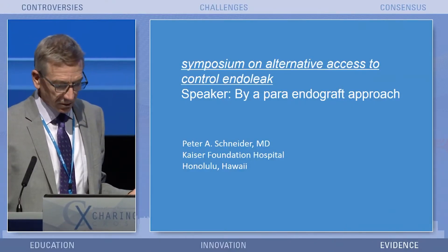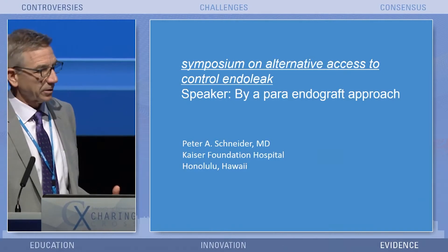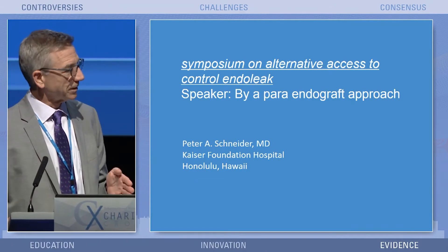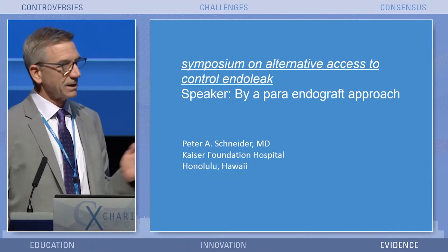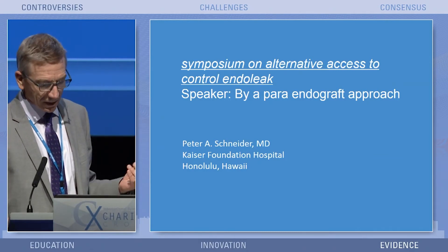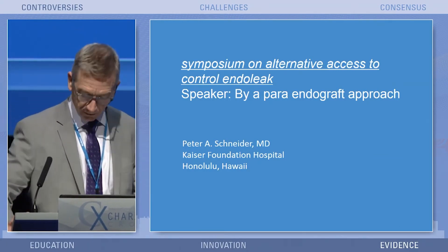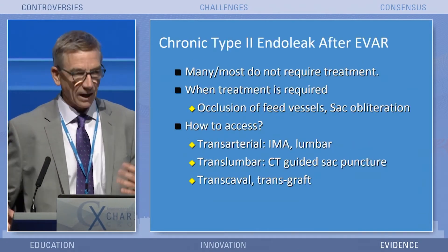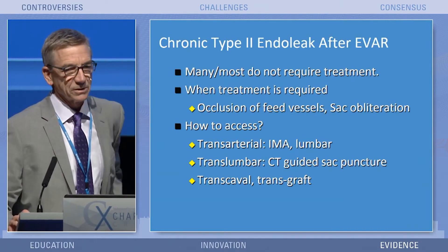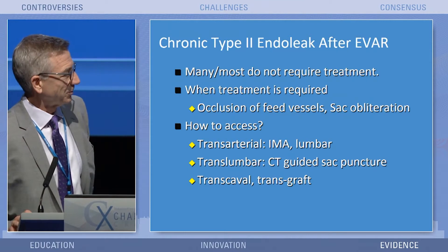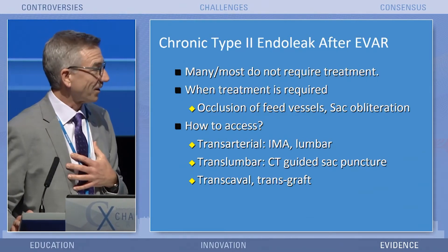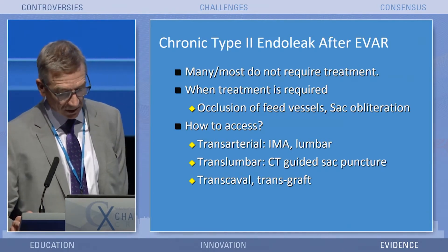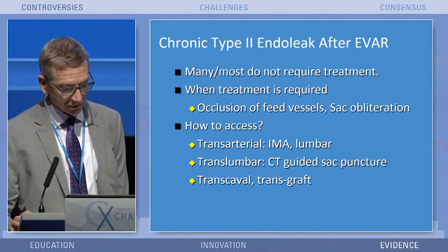We all agree that you don't treat type 2s very often, but there is a category of malignant type 2 that is almost like a congenital AVM — you treat it one way, it pops up another way. These patients require hyper-monitoring and sometimes you never really solve the problem long-term. There are a lot of different ways to get into the sac, and in our discussion we'll likely find that we all use many of these methods. No single method is perfect or best, but some are better in certain clinical situations.